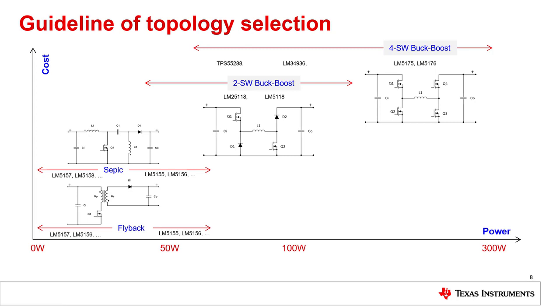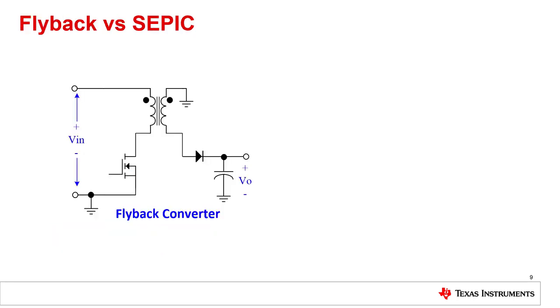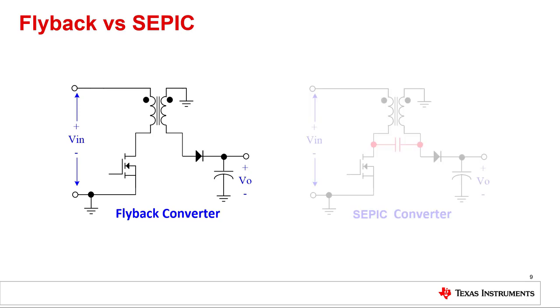As we recommend SEPIC or flyback for lower power applications, let's have a more detailed look at these topologies. This is the basic schematic of a flyback converter. It is redrawn with the ground on the top for an easier comparison to the SEPIC. Here you can see exactly the same schematic. The only difference is a coupling capacitor from the input to the output and hence now you have a SEPIC converter.